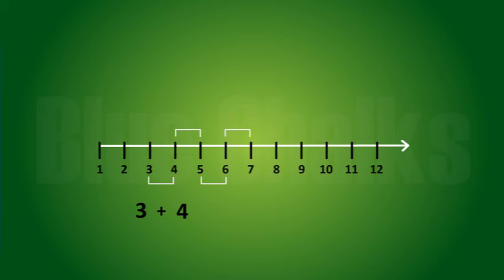The tip of the last arrow in the 4th jump is at 7. The sum of 3 and 4 is 7.